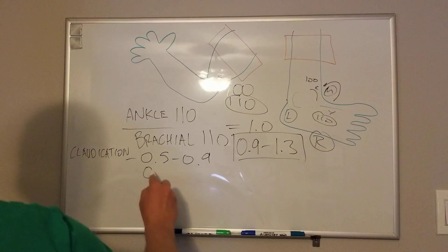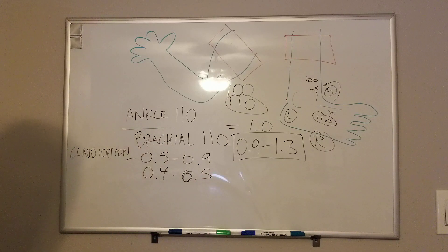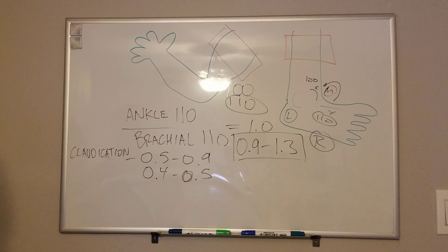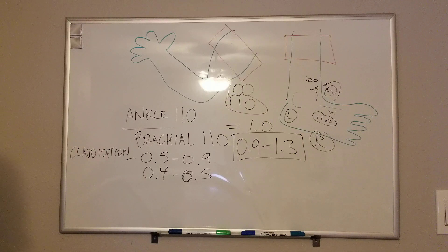Lower than that — around 0.4 to 0.5 ABI — you're starting to get into the ischemic rest pain zone. With elevation or lack of dependency of that limb, they start to have cramping pain where they're having ischemia. The classic example is: when I'm in bed my leg is elevated, and it really starts to cramp, usually over the dorsum of the first toe or the arch of the foot. But when I stand up and walk around, or hang my leg over the side of the bed, the pain goes away — because with that dependency, gravity helps pull flow down to the leg. That's classic ischemic rest pain.